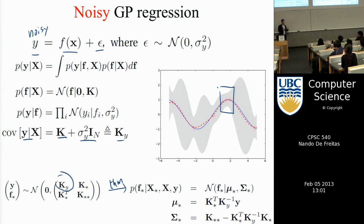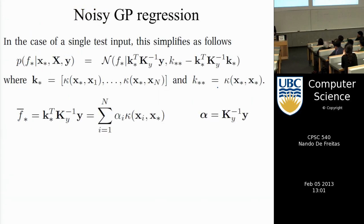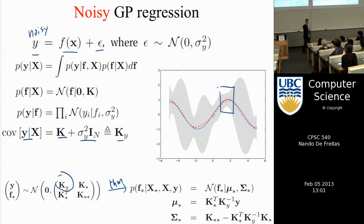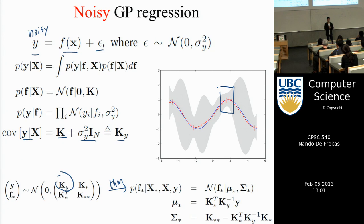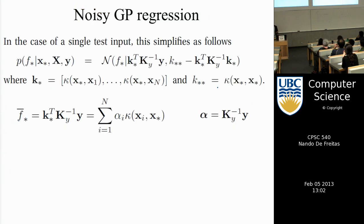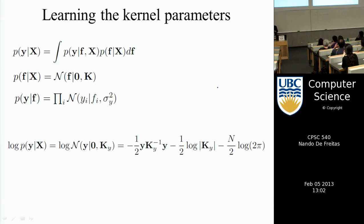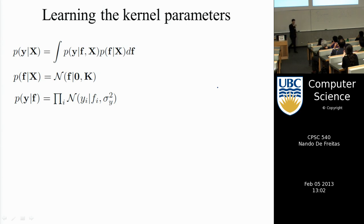For now, we will assume we specify the prior and have good knowledge in doing so. For your project, you will likely do empirical Bayes or maximum likelihood type 2, because that's what people do in practice. I'm putting a prior on a function and I don't know what L is — the width of the similarity kernel. So the width is one level in the hierarchy. What I'm going to do next is describe an algorithm for choosing that width — effectively doing empirical Bayes.